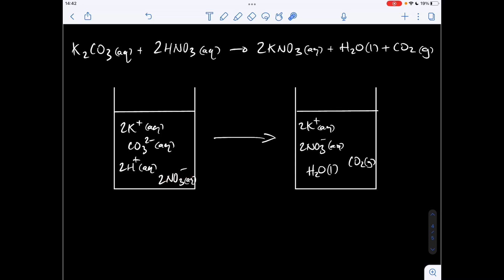Moving on to the products. We've got two K pluses, two nitrate ions, H2O stays as H2O. So this is why I'm bringing this example in now. And CO2 gas stays as CO2 gas.